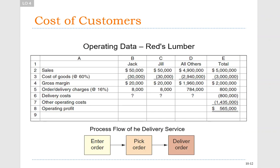We're going to consider operating data for BEDS Lumber and two particular customers, Jack and Jill. The service we're providing is the delivery of lumber, and our workflow involves entering an order, picking an order, and then delivering an order. Both Jack and Jill make the same level of purchases — $50,000 a year — and the cost of goods sold is $30,000, leaving a gross margin of $20,000 for both. We're currently allocating delivery charges as 16% of revenues, which is $8,000 for both customers, making them look equally profitable.